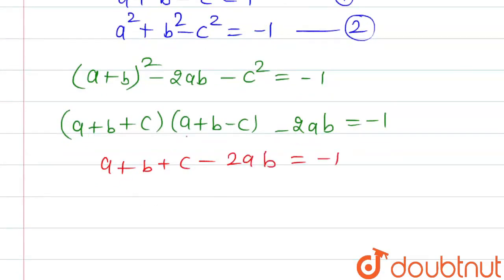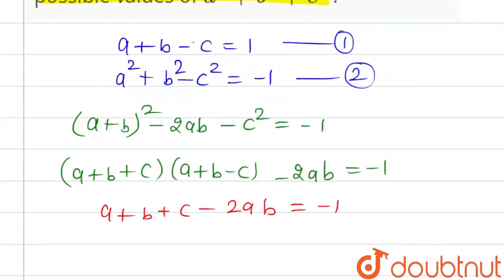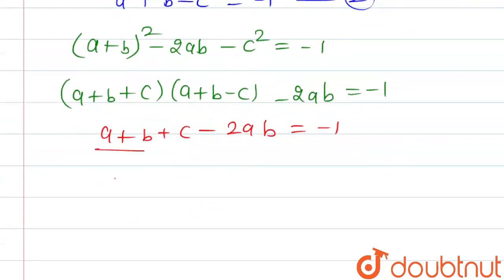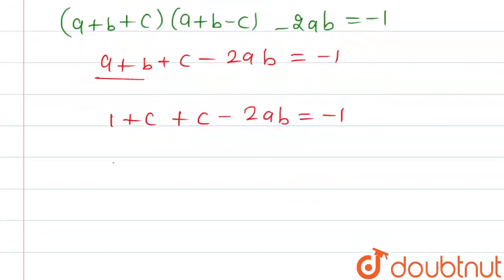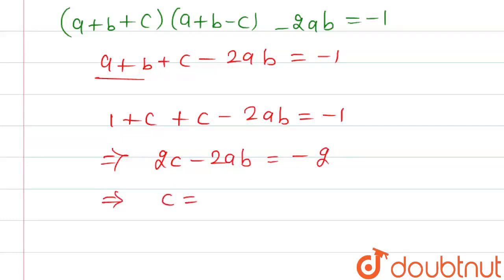Since a plus b minus c equals 1 from equation 1, that factor becomes 1. So we get a plus b plus c minus 2ab equal to minus 1. From equation 1, a plus b equals 1 plus c. Substituting: 1 plus c plus c minus 2ab equals minus 1, which gives 2c minus 2ab equals minus 2, so c equals ab minus 1, which means c equals a plus b minus c — consistent with equation 1.